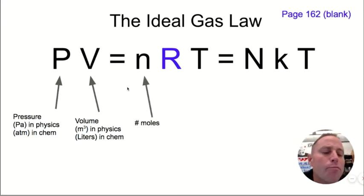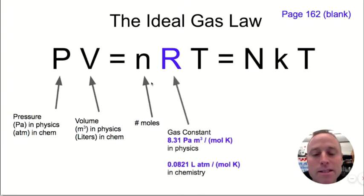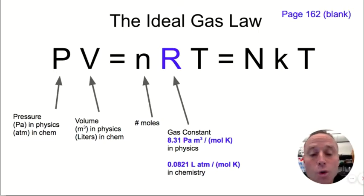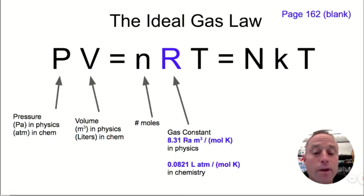N stands for the number of moles — one mole is 6.02 times 10 to the 23rd things, usually molecules or atoms. R is a gas constant, and which value you use depends on the system of units. In AP Physics 2 we use basic metric units, so pascals and cubic meters per mole Kelvin. In chemistry, you tend to use liters and atmospheres.